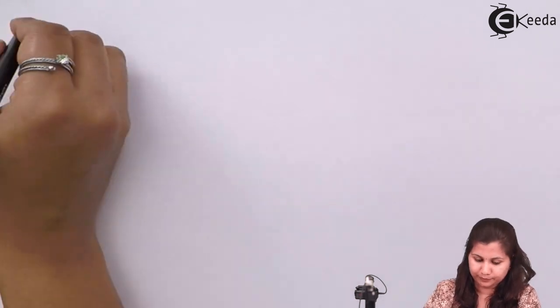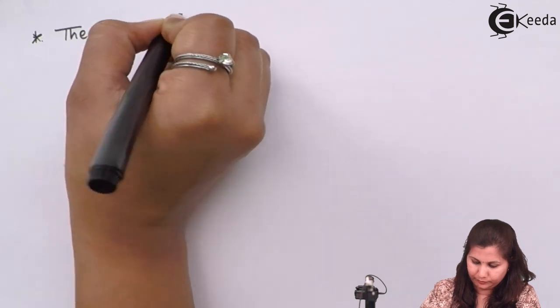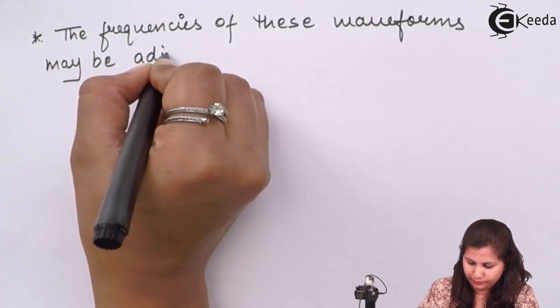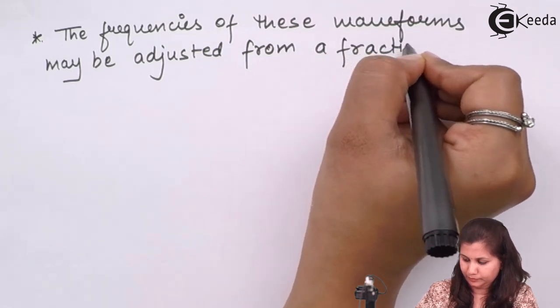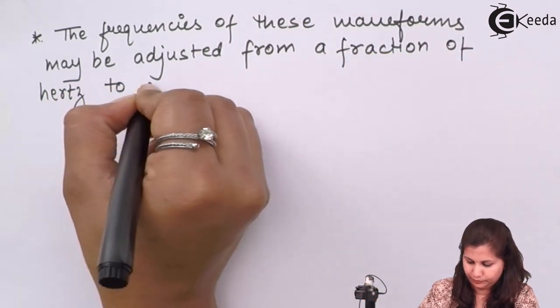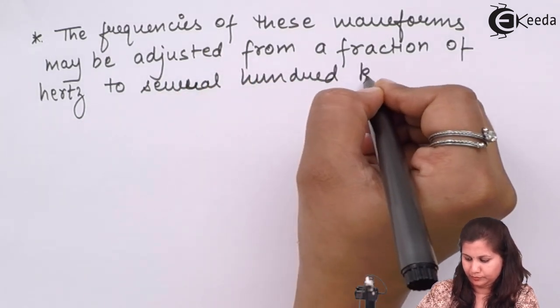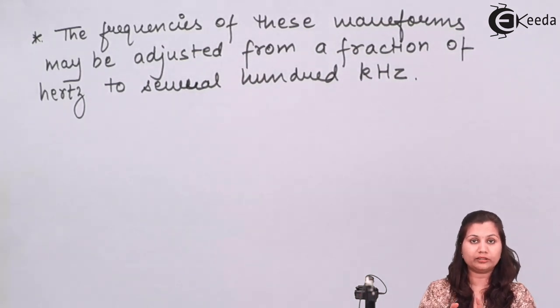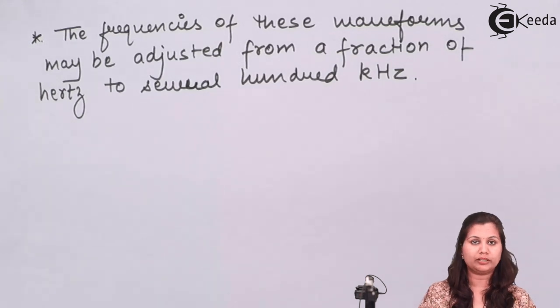Because the function generator generates these waveforms, these waveforms have some frequencies. The frequencies of these signals can be adjusted from a few hertz to several kilohertz. The function generator produces waveforms in the range from a fraction of hertz to several hundred kilohertz.